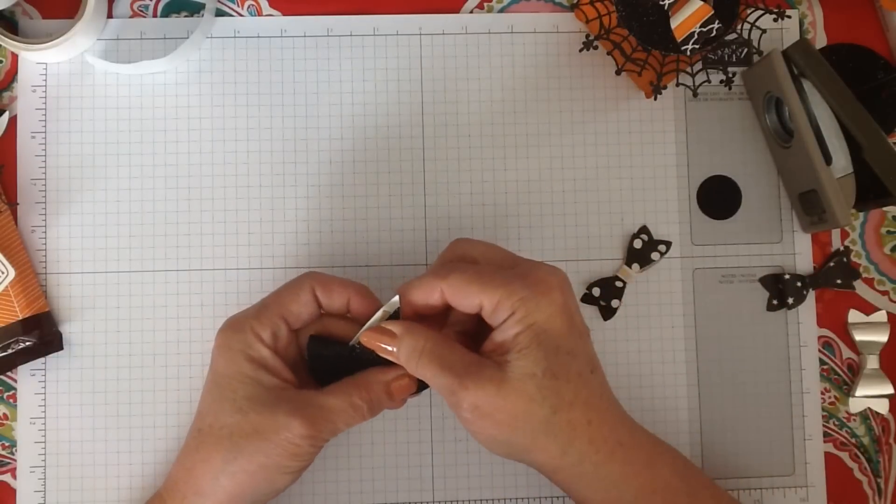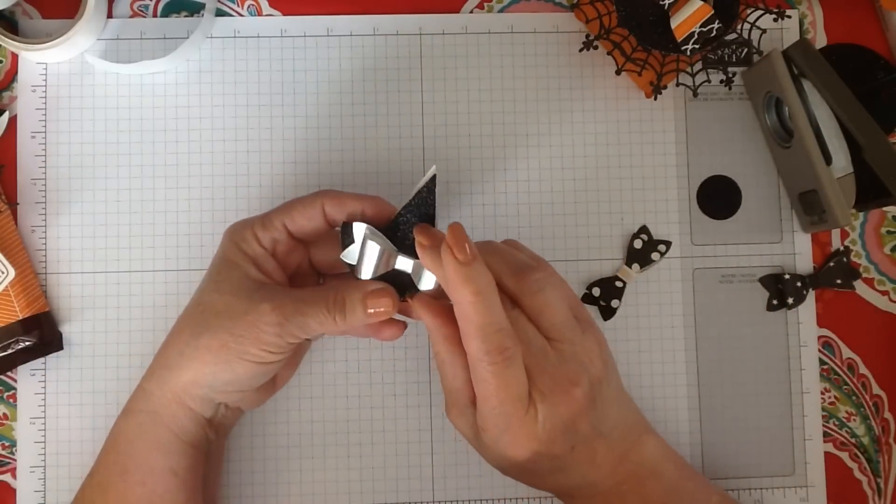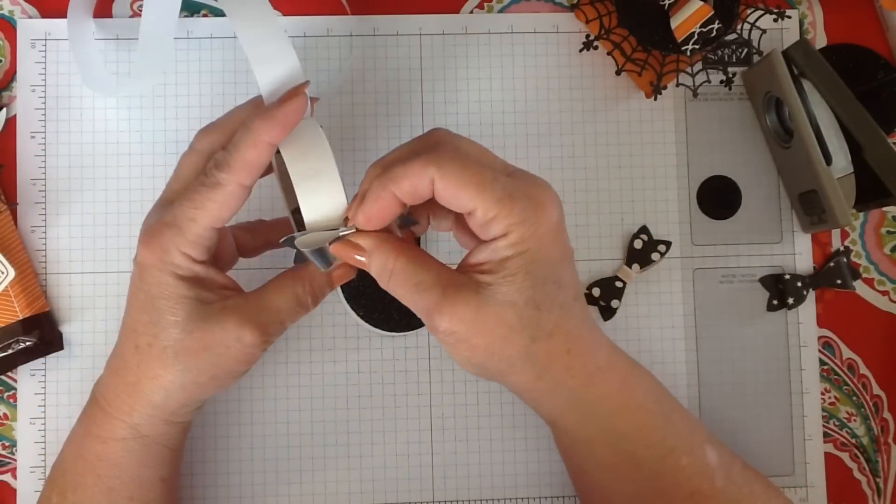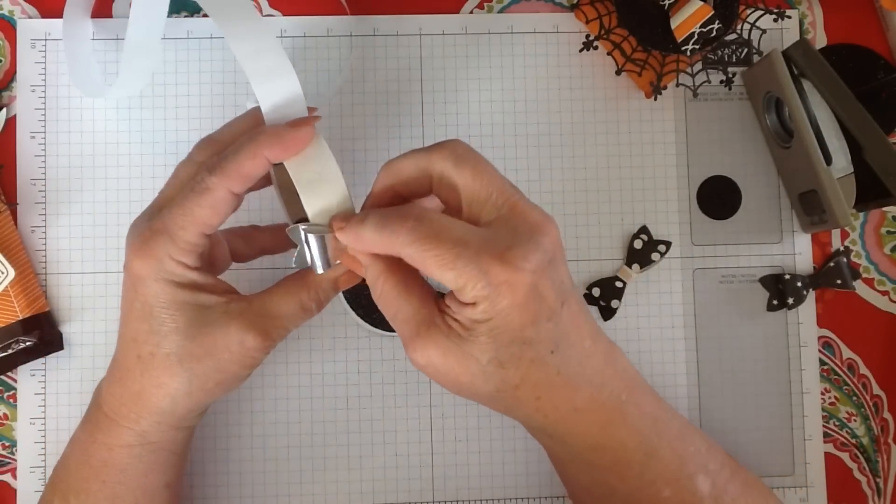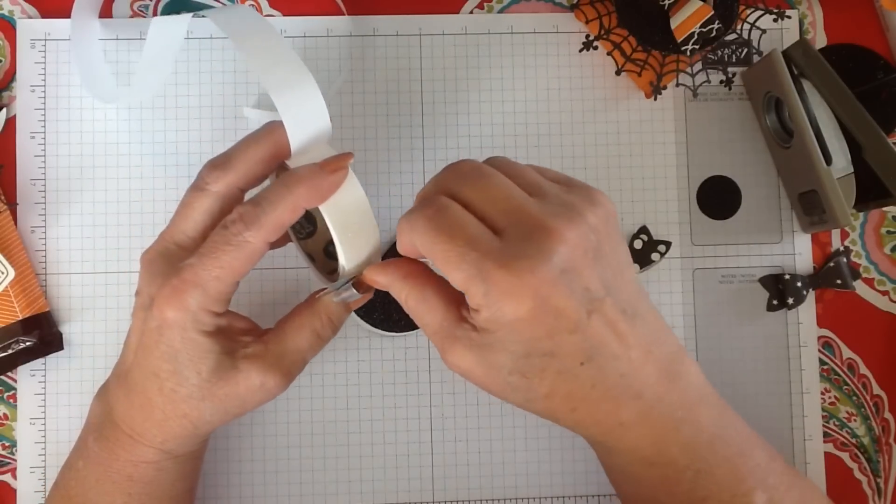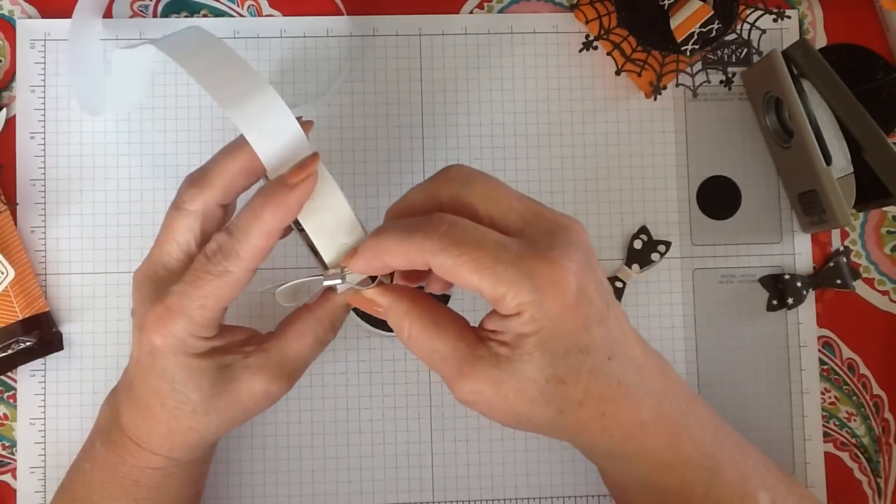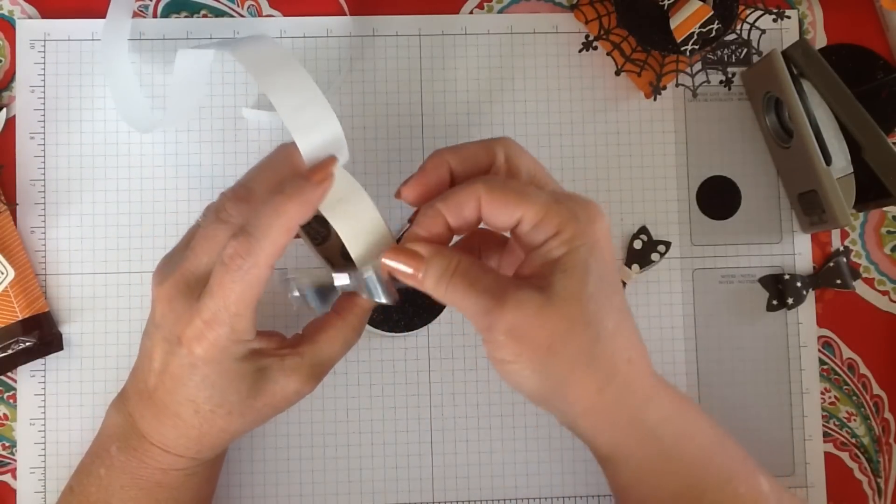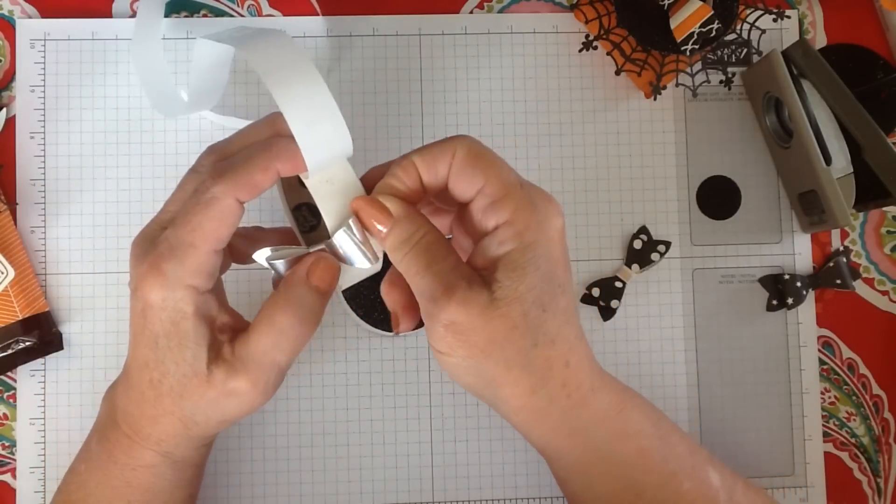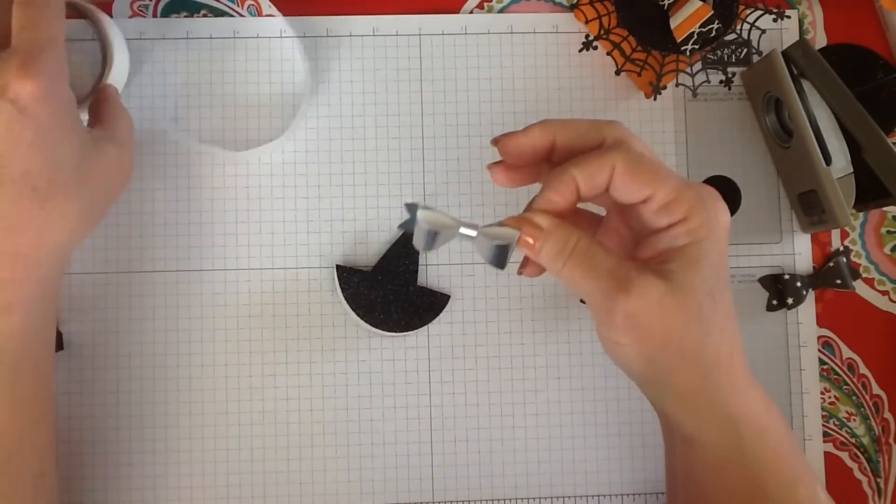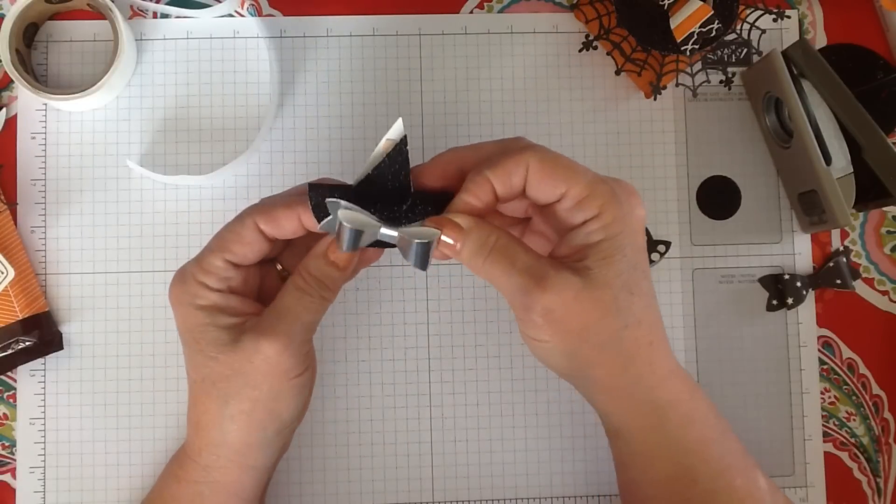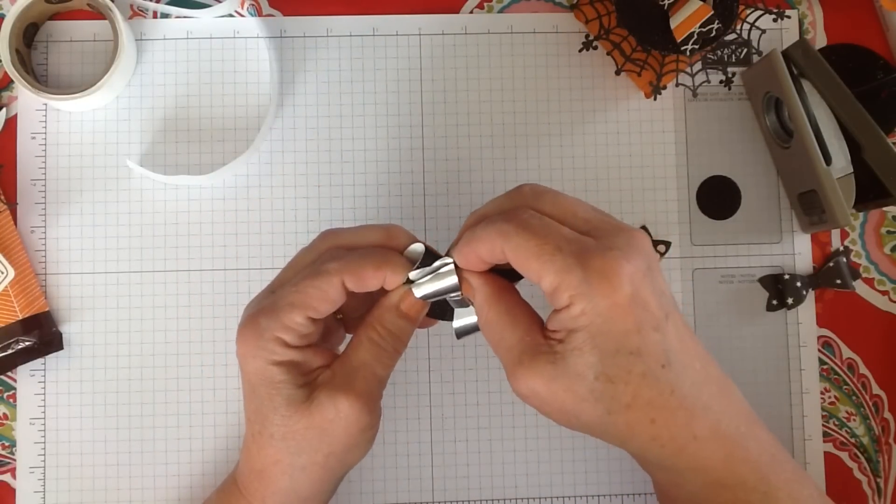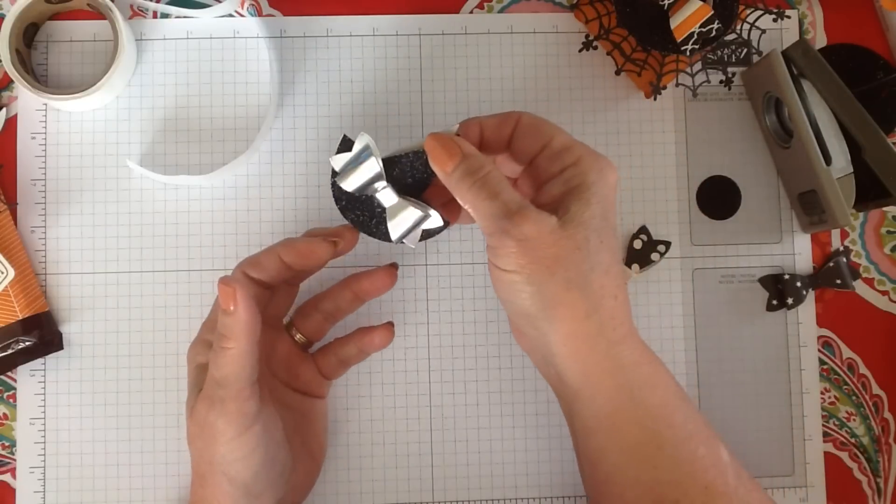Stick a bow on it. You can do any kind of bow you want with any kind of paper. I'll put a glue dot on this one. Stick your little glue dot on here just like that. So you've got your little witch's hat.